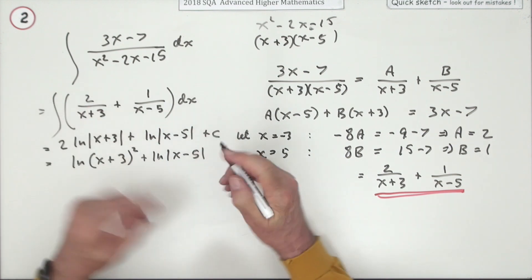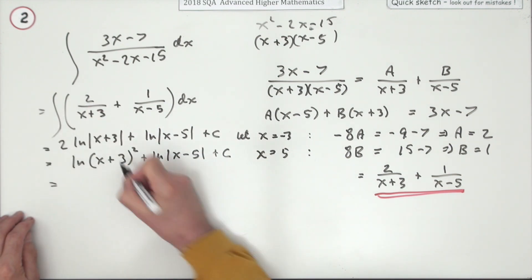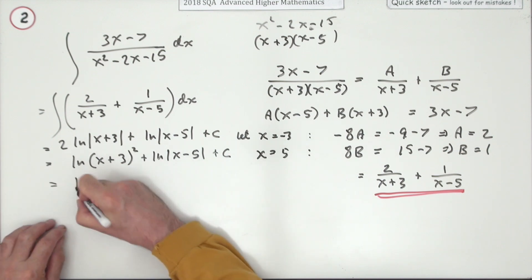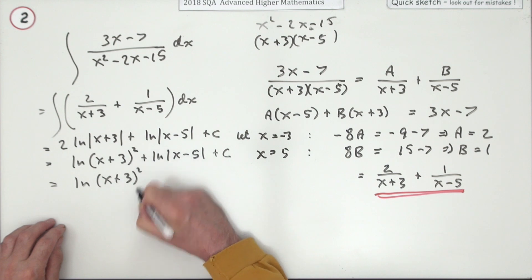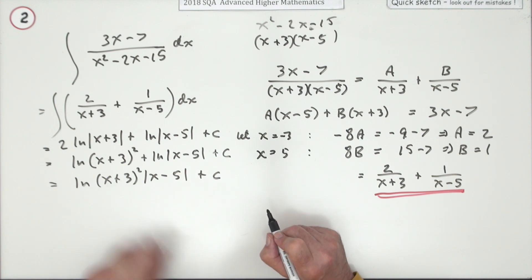Right, now tidy that up because a log plus a log is just a log of the product. I don't know that you particularly need to bother about the nature of the brackets that you put down if you just keep them all inside those straight forms. There's only four marks for the whole question after all.